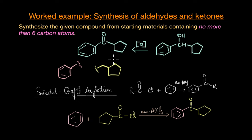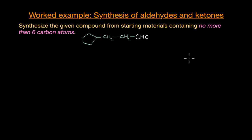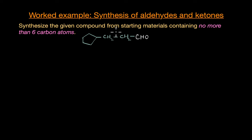Let's look at one more question before wrapping up. In the next question we have an aldehyde with the same constraint: synthesize it from starting materials containing no more than six carbon atoms. Since we cannot break the ring, we break the bond here, giving six carbon atoms on one side and two carbon atoms on the other.